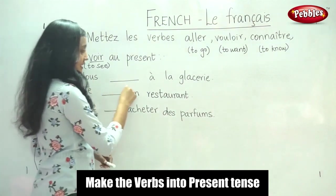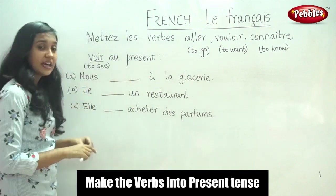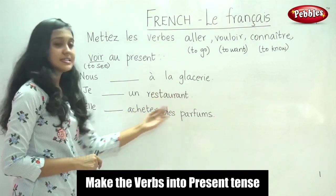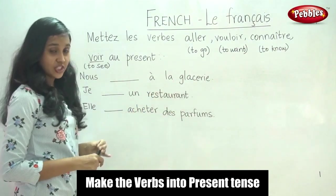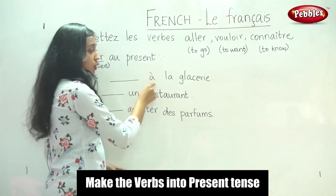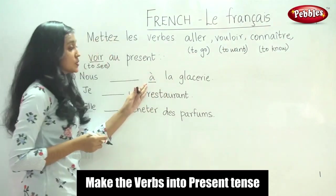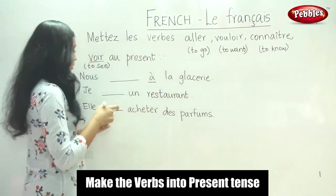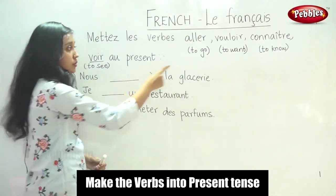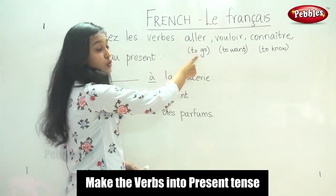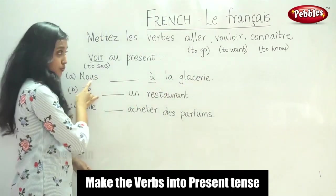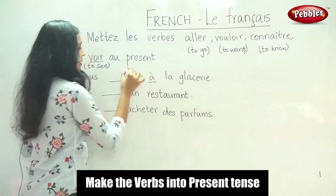The first sentence is: Nous — à la glossaire. Even if you do not know the meaning of the sentence, you can use a dictionary. There are certain clues in the sentence — for example, 'Nous — à,' where 'à' is used before a place. So we have: we, blank, and a place. The verb that fits here is Aller, meaning to go — we go to this place.